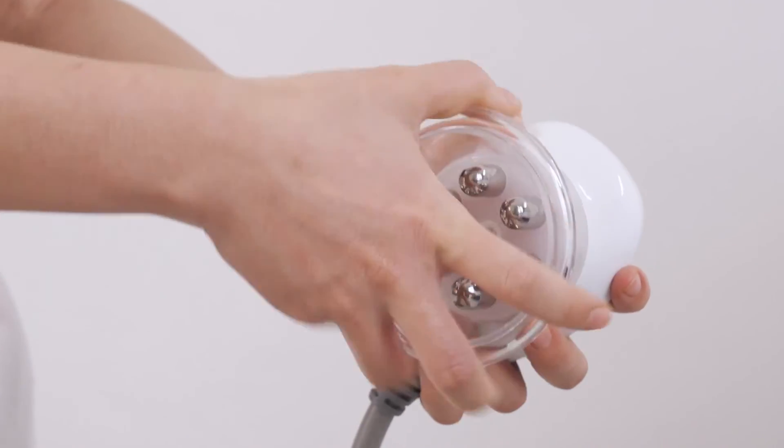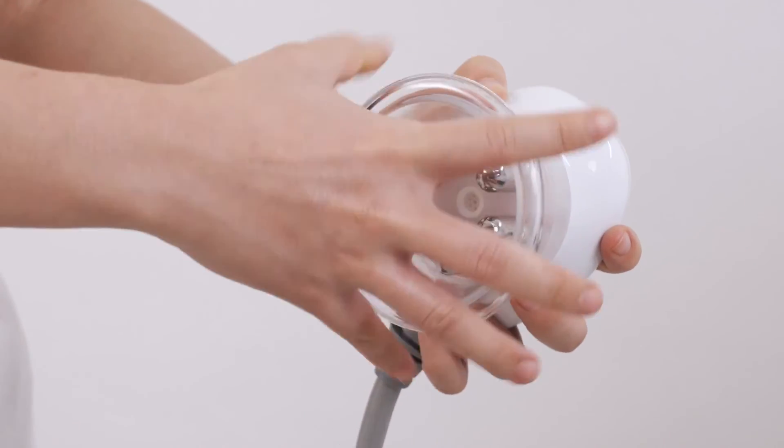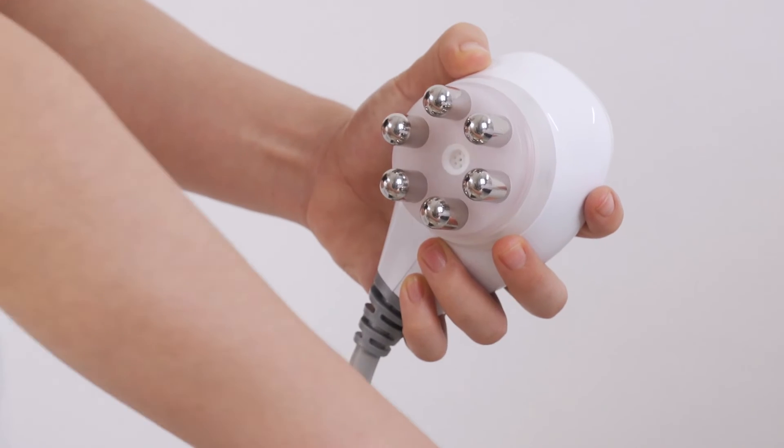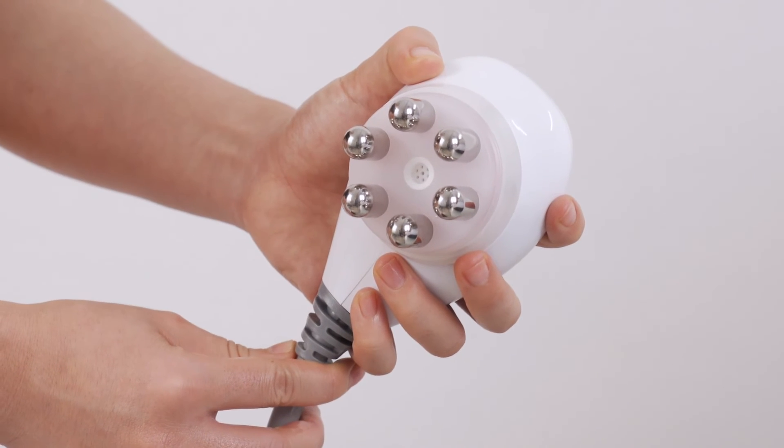The cavitation function of the Storm vacuum and cavity handpiece can be used alone. You just need to detach the vacuum cup and then set the cavitation function parameters.